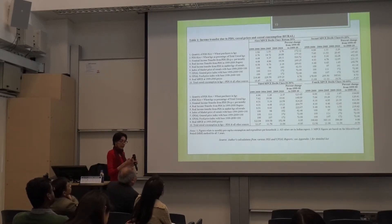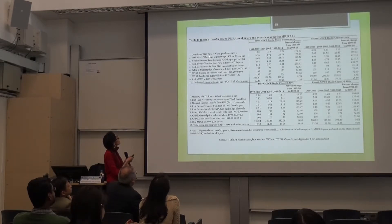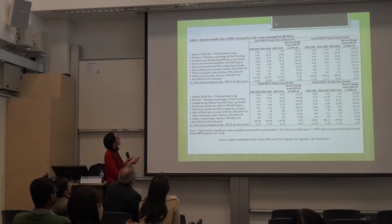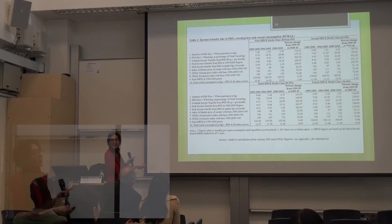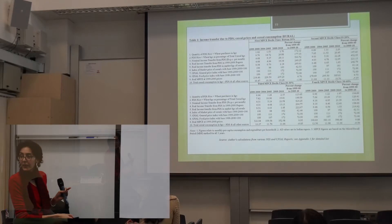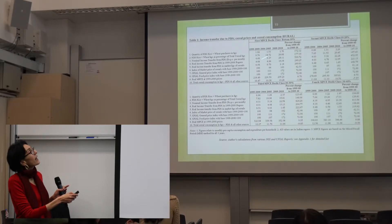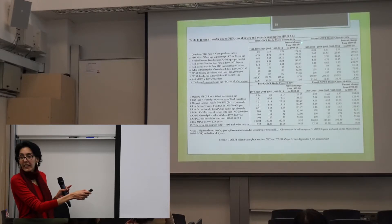This is a very complex table, so I'm going to split it up to highlight the issues. Basically, I've calculated the quantity of rice and wheat households get from the PDS, across four deciles — the bottom 10%, 10 to 20%, 20 to 30%, and the fourth decile — and across three different years: 1999-2000, 2004-05, and 2009-10, looking at the percentage changes over the entire 11-year period. I've calculated the nominal income transfer from the PDS in rupees per capita per month.